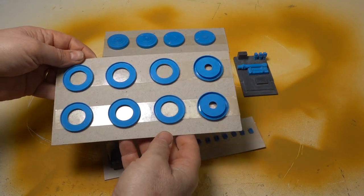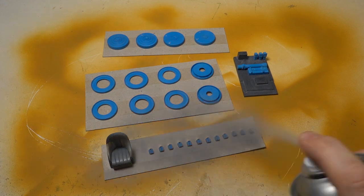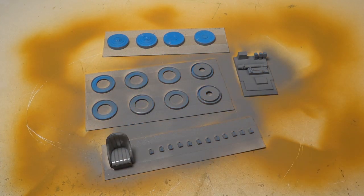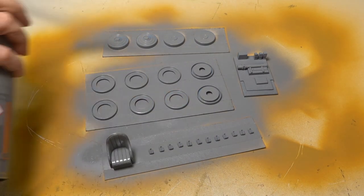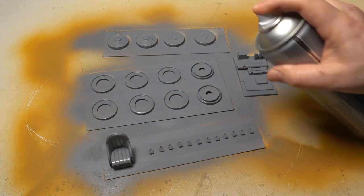While the body was drying I gave all the other parts a coat of grey primer. I used double-sided tape to temporarily fix them onto some heavy card to make spraying easier.